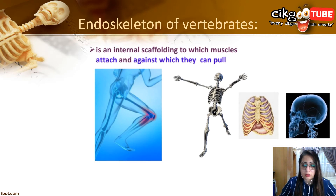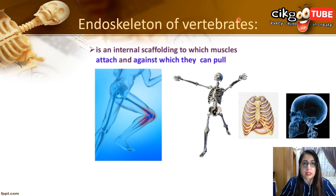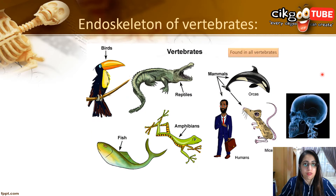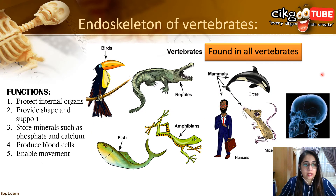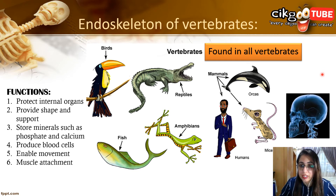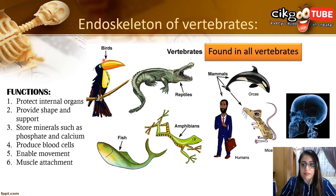The internal skeleton, the endoskeleton, comprises a frame of bones and cartilage, which are rigid for the attachment of body muscles and tissue. Individual bone components are bound to each other by ligaments at the joints. The endoskeleton provides support, allows movement, protects internal organs, gives shape to the body, and stores minerals. Endoskeletons are found in all vertebrates — animals that have a skeleton inside their body.